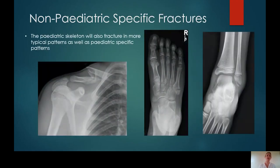Examples of non-paediatric specific fractures — these are injuries that we see amongst the adult population as well. It's not all about paediatric specific fractures within the paediatric population. We're not just looking at buckle fractures or greenstick fractures; we have a whole host of injuries that we can see as well.